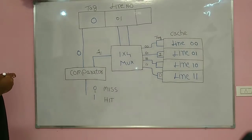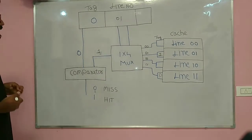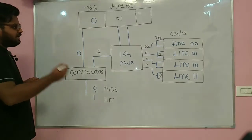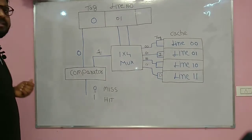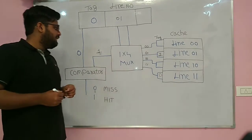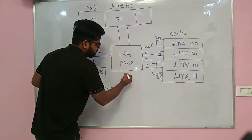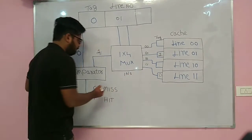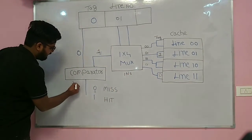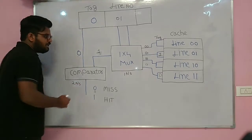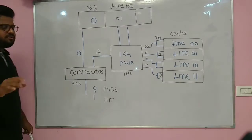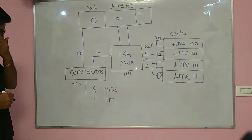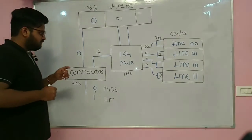What is the total delay to determine whether there is a cache hit or miss? Let us say the mux takes 1 nanosecond and the comparator takes 2 nanoseconds. Then the total delay equals 1 nanosecond plus 2 nanoseconds — 3 nanoseconds total. So the hit latency is 3 nanoseconds.